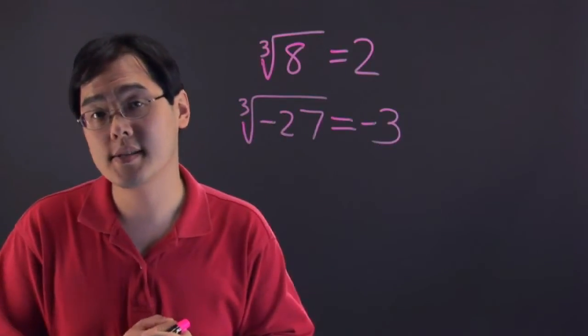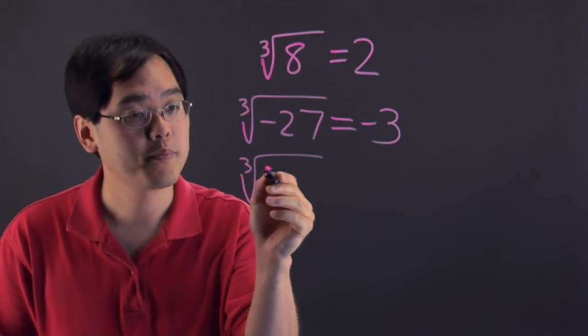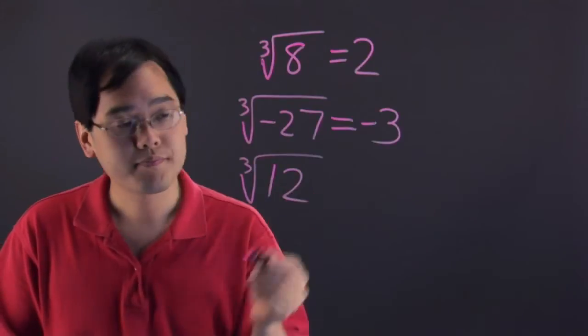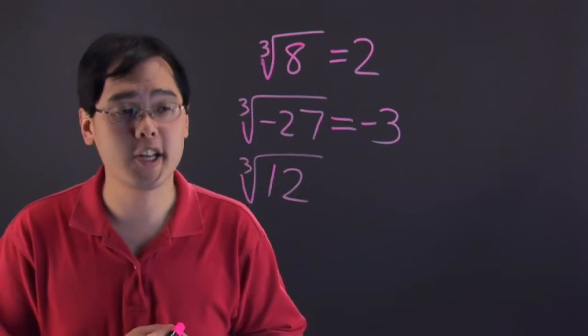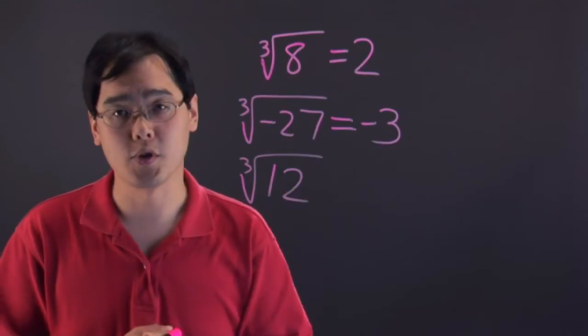Now is every number going to work out like this? Well, unfortunately not, for example if you have a cube root of 12, it's a lot more difficult to manage because there's no number multiplied by itself 3 times or raised to the 3rd is going to give you 12.